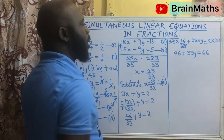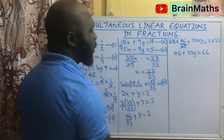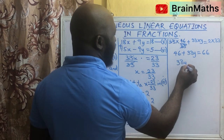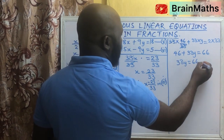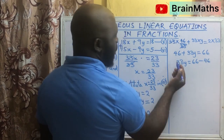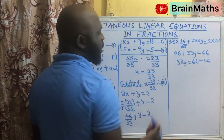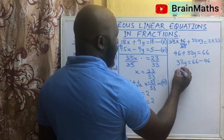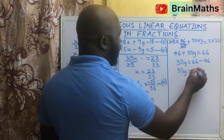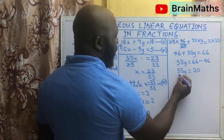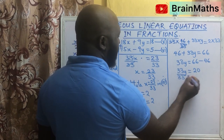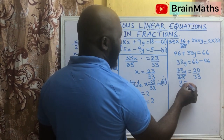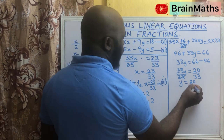So we are looking for the value of y. We collect like terms and take 46 to the other side, so we are left with 33y equals 66 minus 46. Since 46 is positive on the left-hand side, we are going to have 33y equals 20. Then we divide both sides by the coefficient of y, which is 33. And then y equals 20 over 33.